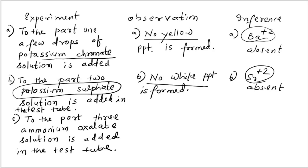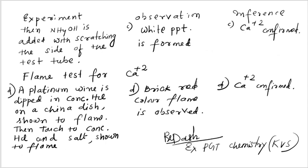Since Ba²⁺ and Sr²⁺ are absent, Ca²⁺ may be present. To part three, ammonium oxalate solution and ammonium hydroxide are added, scratching the wall of the test tube. A white precipitate is formed — Ca²⁺ is confirmed. Additionally, the flame test on the white precipitate shows a brick red color, confirming Ca²⁺.